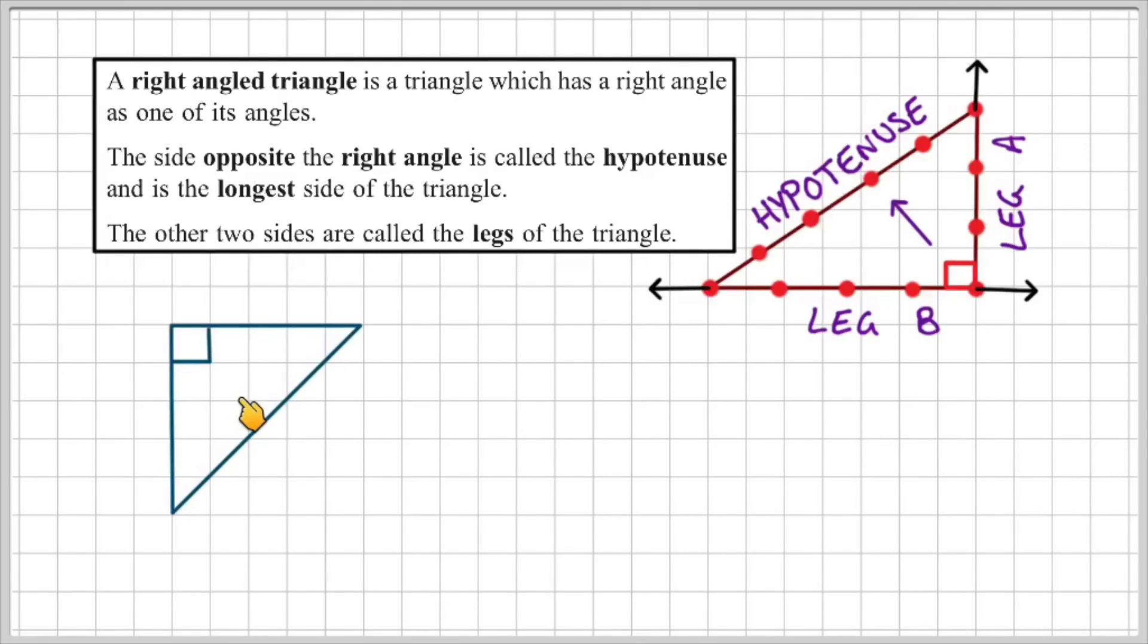So here's an example of a triangle. Try to guess where the hypotenuse is. Yep, it's opposite the right angle. So this is the longest side of the triangle and it's called the hypotenuse. Here's another one. See if you can figure out where the hypotenuse is. If you guessed it was here then you're absolutely correct because it's opposite the right angle.